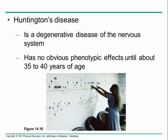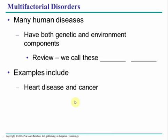Huntington's disease is a neurodegenerative disease that doesn't rear its ugly head until about 40 years old, and it is also an autosomal dominant disease. Here you see this woman looking at a quite significant family tree.